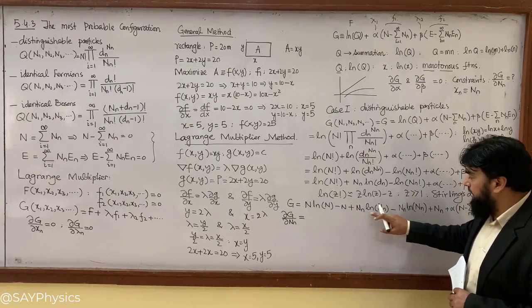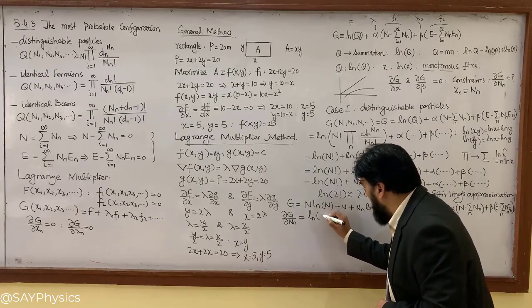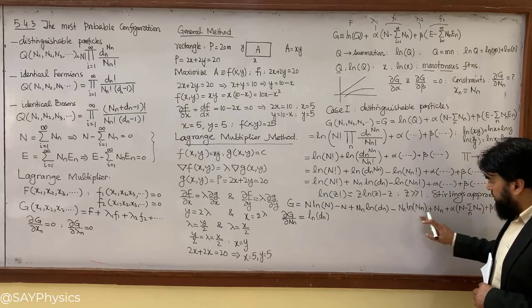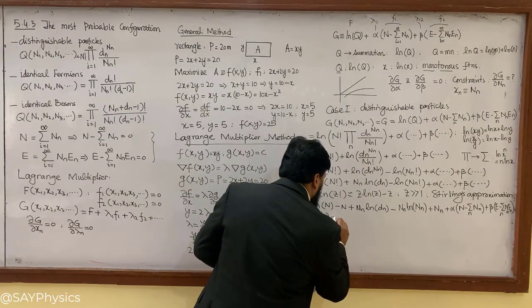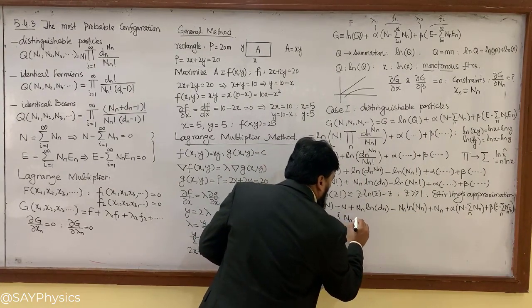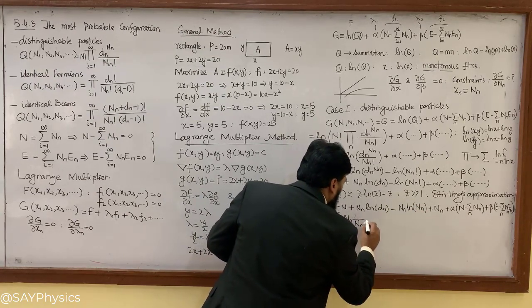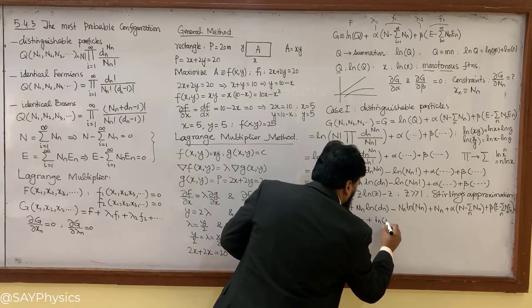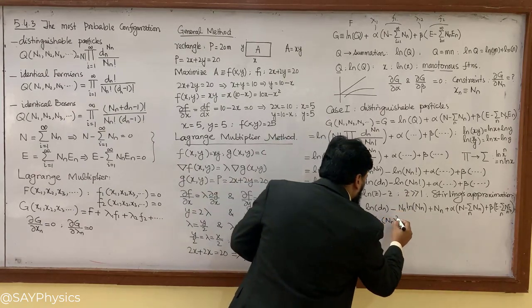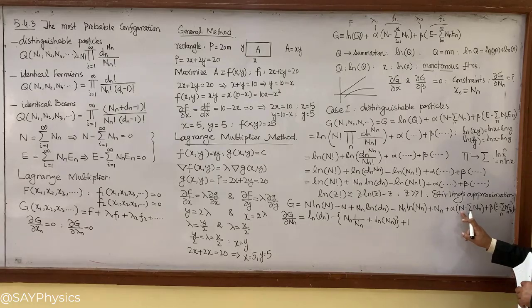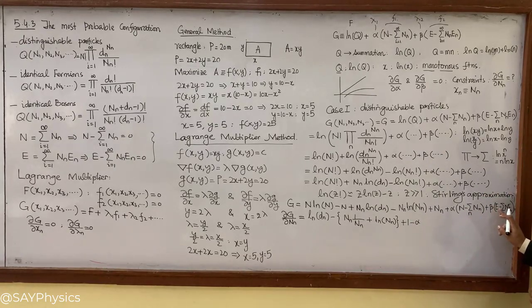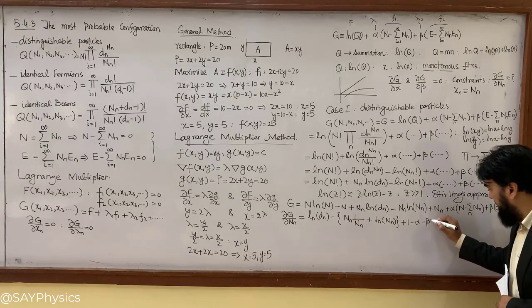Differentiating: N_N becomes 1 and log(D_N) stays, giving log(D_N). Then applying the product rule on the N_N·log(N_N) term: minus [N_N·(1/N_N) + log(N_N)·1], which gives minus 1 minus log(N_N). Plus the +N_N term gives +1. For the constraint terms: alpha gives −alpha and beta gives −beta·E_N. Setting this equal to 0.